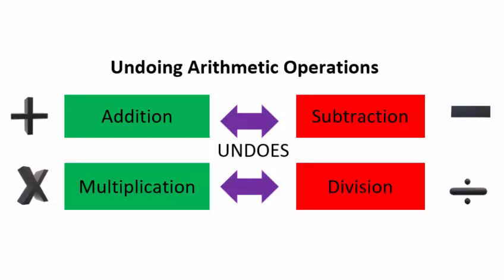Undoing arithmetic operations is extremely important when solving equations. Addition can be undone by subtraction; subtraction can be undone by addition; multiplication can be undone by division; and division can be undone by multiplication.